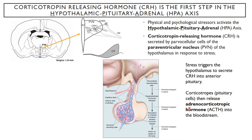Corticotropin-releasing hormone, or CRH, is the first step in the hypothalamic-pituitary-adrenal axis. It is released by parvocellular cells in the paraventricular nucleus of the hypothalamus in response to stress. The paraventricular nucleus is in the more dorsal portion of the hypothalamus and is filled with all of these parvocellular cells. These CRH-positive neurons send their axons down into the median eminence — the infundibular stalk — and release CRH into the portal area.